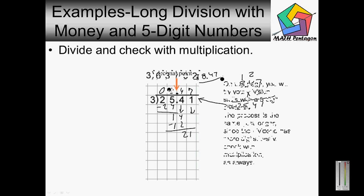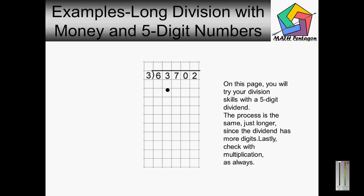Here we have five digit numbers. The only difference between the four digit and five digit is that this one has five digits — it's as simple as that.